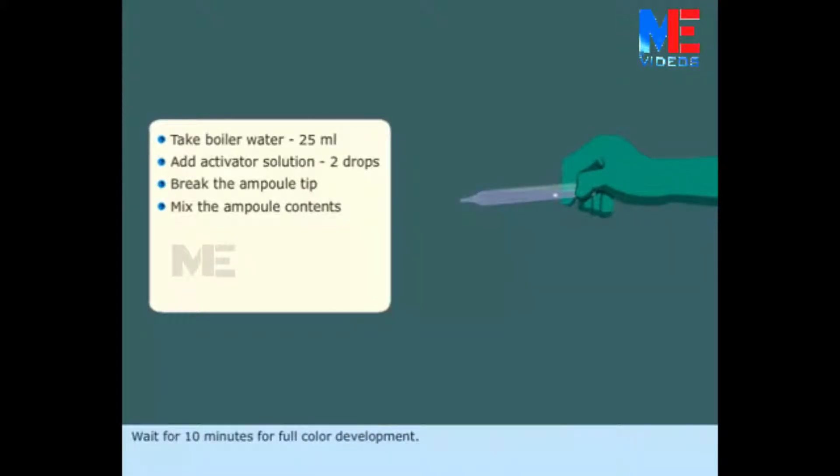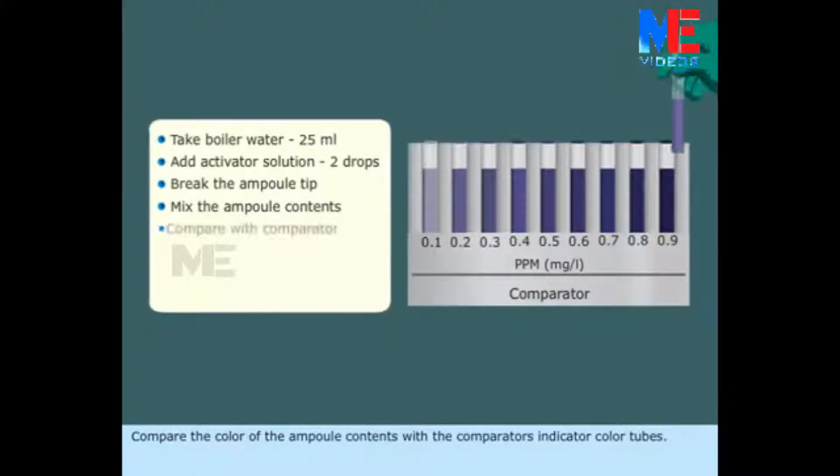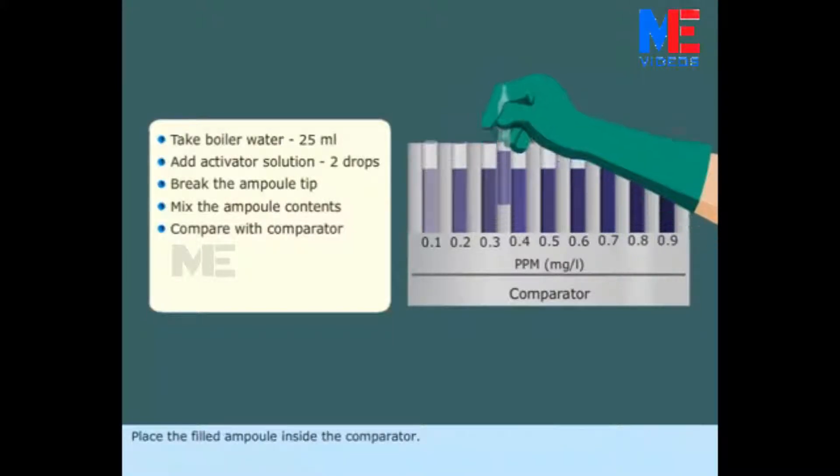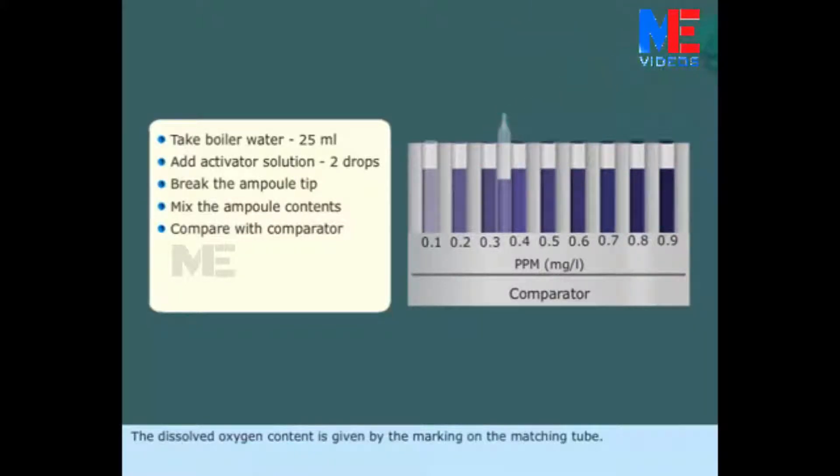Wait for 10 minutes for full color development. Compare the color of the ampoule contents with the comparator's indicator color tubes. Place the filled ampoule inside the comparator. The dissolved oxygen content is given by the marking on the matching tube.